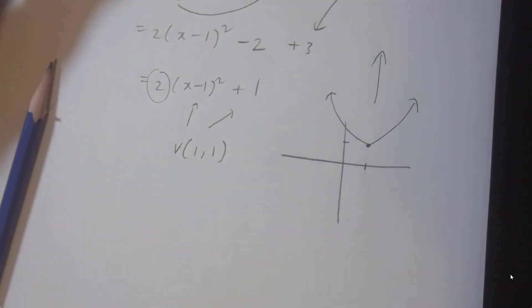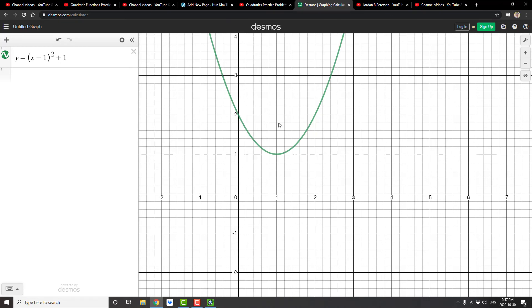I'll show you on Desmos. So this here is a standard parabola with a vertex 1, 1. You can even click on it and you can see that it's true.